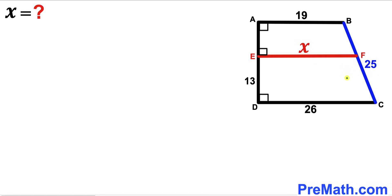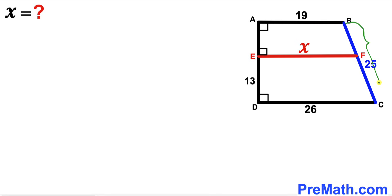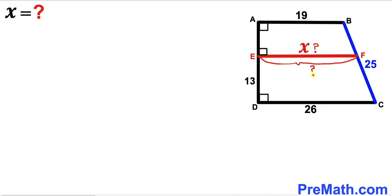Welcome to PreMath. In this video we have got trapezoid ABCD along with segment EF, as you can see in the given diagram, such that segment EF is represented by X, whereas the other bases are 19 and 26 units respectively. Segment BC is 25 units and segment ED is 13 units. Our task is to calculate the value of X — in other words, find the length of segment EF.